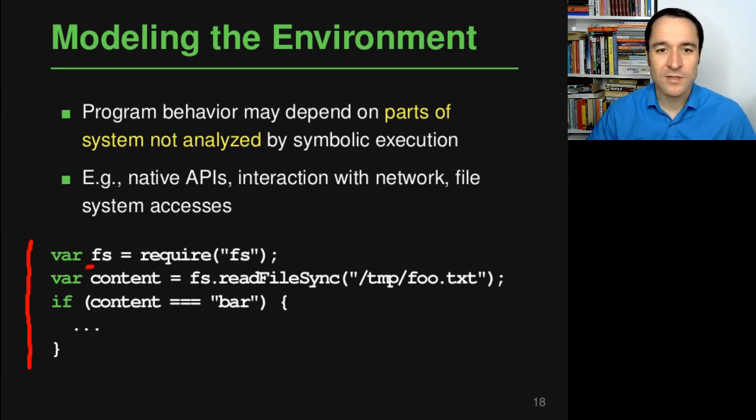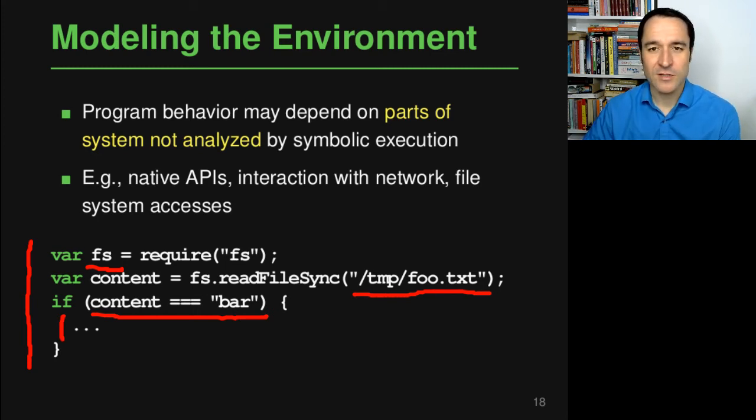And this is also the problem that is illustrated down here with this simple example where we have some JavaScript code that uses this FS module to read from the file system. So we are reading a particular file stored somewhere in a file called foo.txt here, and then depending on the content of this file, we are entering this branch or not. And it's not clear how a symbolic execution engine should actually reason about what is read from the file system.